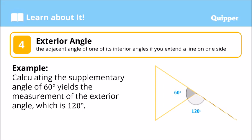If this angle is also 60 degrees, and we extend that line, we form another angle. So this exterior angle right here is also 120 degrees. And this interior angle right here is also 60 degrees — that's also 60 degrees.